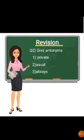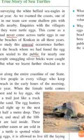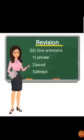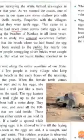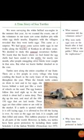Give antonyms — that means opposites. These answers you also find in the passage. The first word is 'private' — its opposite is 'public.' The second word is 'usual' — its opposite is 'unusual.' The third word is 'always' — its answer is 'never.' So in this way, I can ask antonyms as well as synonyms.